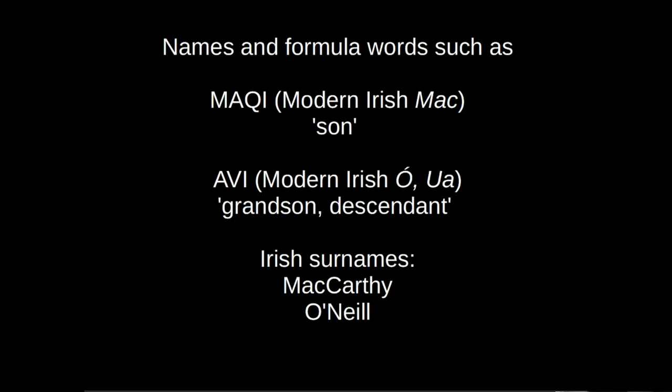You might be wondering what they wrote with this Ogham script, and the answer is names — names of people and kin groups who were obviously important at the time. We also find formula words such as 'Maqqas' meaning son (modern Irish 'Mac') and 'Avi' meaning grandson or descendant (modern Irish 'Ó'). These would be the origins of our Irish surnames like McCarthy, O'Neill, and so on.